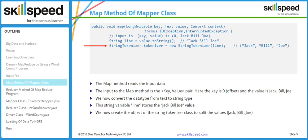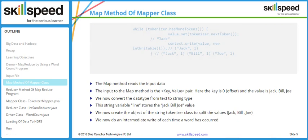Next we create an object of the StringTokenizer class to handle our string value, shown by arrow number three. The reference variable 'tokenizer' holds the address of all the values. We also have a while statement that takes 'tokenizer.hasMoreTokens()' as a parameter — this returns a boolean. If there are more tokens it returns true and control enters the while loop. Inside the loop, 'value.set(tokenizer.nextToken())' sets the next token on the value variable, so for example the token 'Jack' is assigned.